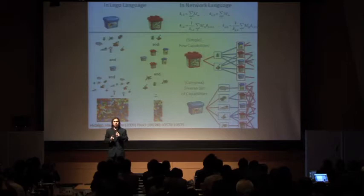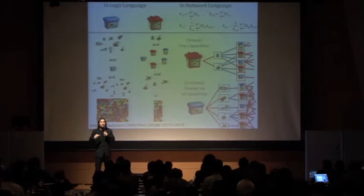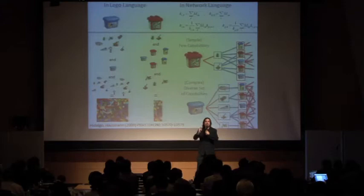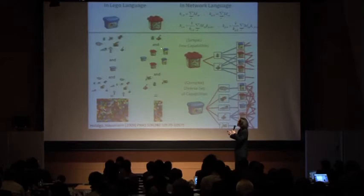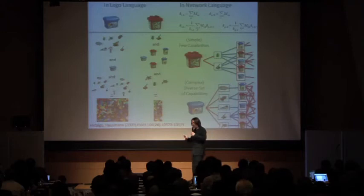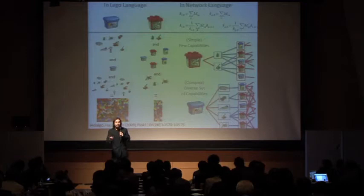What you can do is say, if we have a country that is very diverse, making products that few other countries make, and the countries that make what that country makes also make lots of products themselves, then you have a better guess that that country has a lot of these knowledge pieces — these person bites. Conversely, if a country makes few products that are made by everyone else, and those countries tend to also be very little diverse, then you have a better guess that that country has few person bites. You can connect this idea of the person bite to the structure of the network that connects countries to the products they make, because that network carries a signature of the amount of person bites that countries have and that products require.